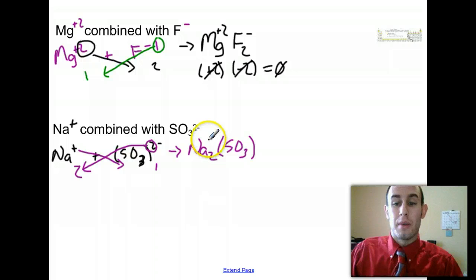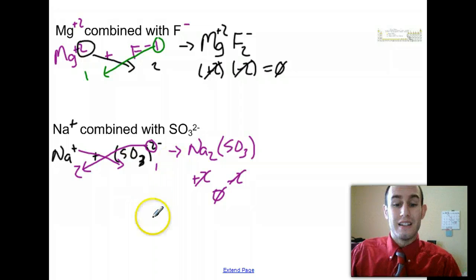So I end up with Na2 parentheses SO3. And again, a two with a positive charge is a plus two. SO3 has a negative two charge, so this is negative two. So negative two plus two, cancel out to be zero. That's the crossover method for writing ionic formulas.